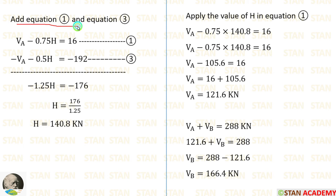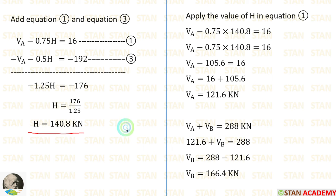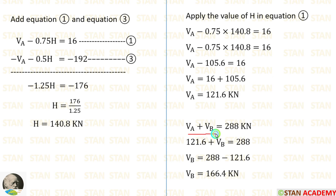Now we are going to solve equation number 1 and equation number 3. We can add both of them. When we add, Va minus Va gives zero. 0.75 plus 0.5 gives 1.25. 16 minus 192 gives minus 176. Finally, we are getting H equal to 140.8 kN. Applying the value of H in equation number 1, we get Va equal to 121.6 kN. Since Va plus VB equals 288 kN, applying Va gives VB equal to 166.4 kN.